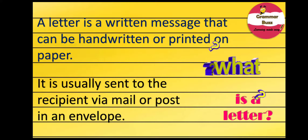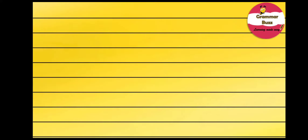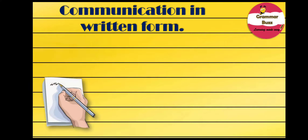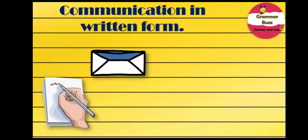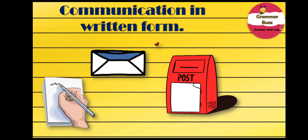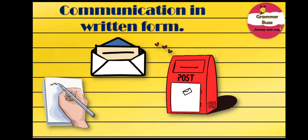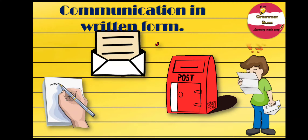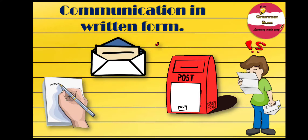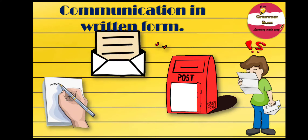It is usually sent to the recipient via mail or post in an envelope. Supposing a person wants to send a message to another person, he will put the letter in an envelope with the address of the receiver written on top of it. Then he will deliver the letter to a post office or post box, and the post office will deliver the same letter to the receiver. So, we know that the primary function of a letter is communication in written form, and this is why we write letters — to communicate in written forms.